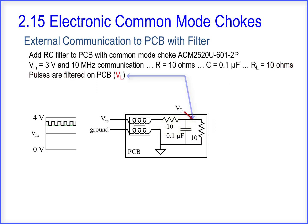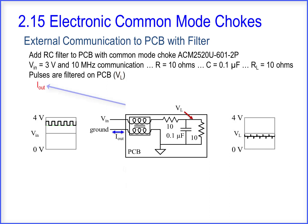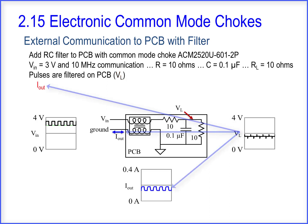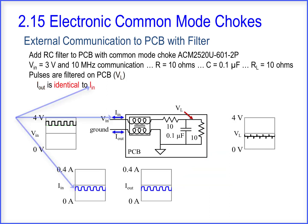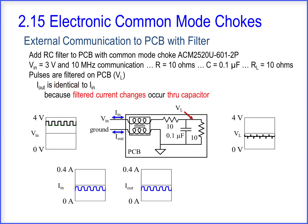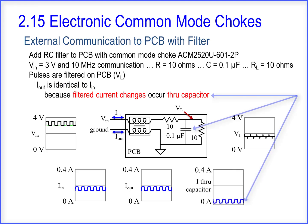Looking at VL, the filtered pulses — the current output is identical to the current input. How is this possible when VL has some unusual shapes? This happens because the filtered current changes occur through the capacitor.